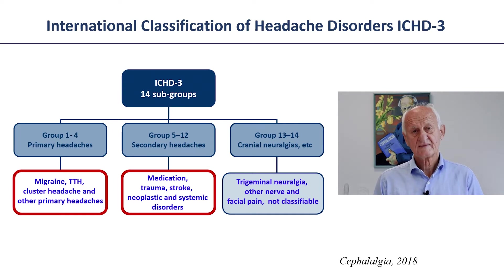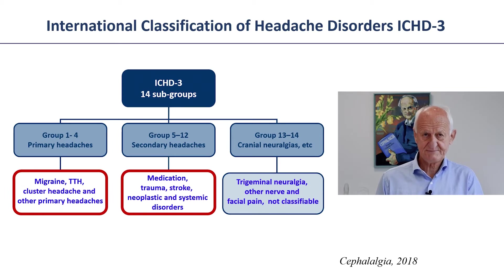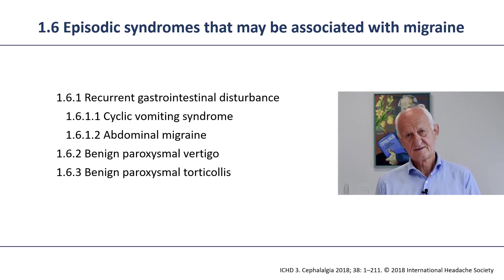The primary headaches can then be subdivided, and the secondary too. In total, we have 14 chapters — 14 groups of headache disorders in the international headache classification. Within each group, we then order the headache disorders in a hierarchy, as shown in this slide.